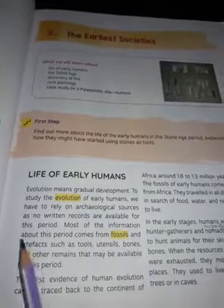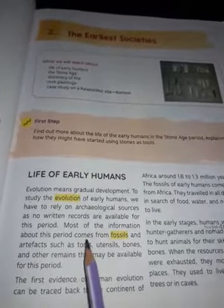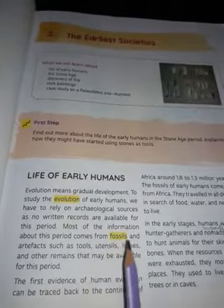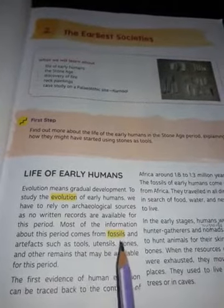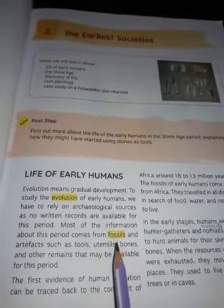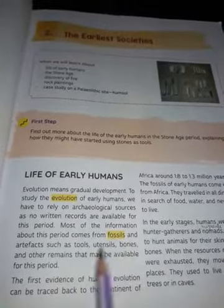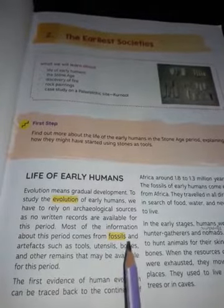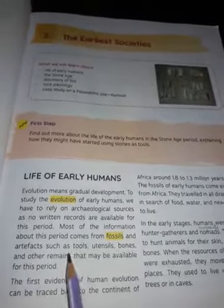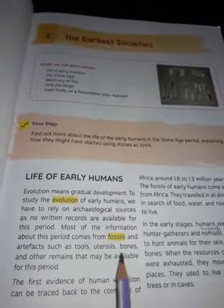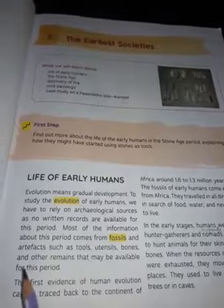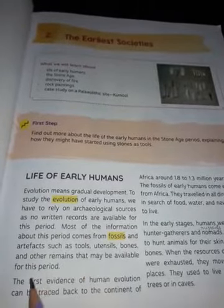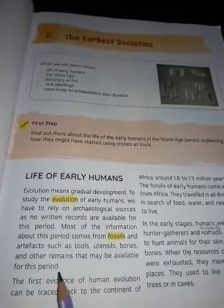Most of the information about this period comes from fossils — aur jyada tar information kuch fossils, kuch minerals, nukhanaj padarth hote hain, unse, artifacts se, tools, utensils, bones se, and other remains that may be available for this period.